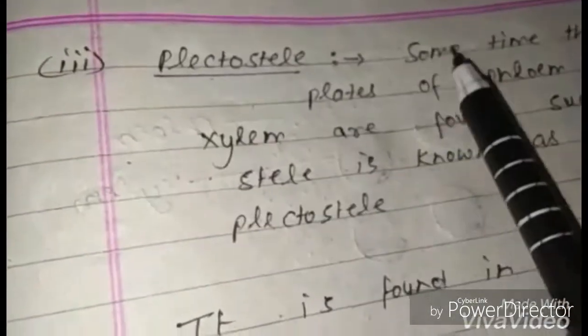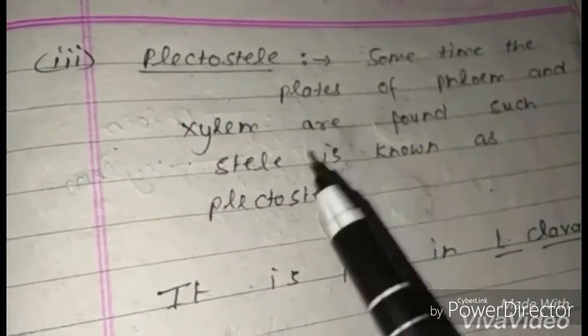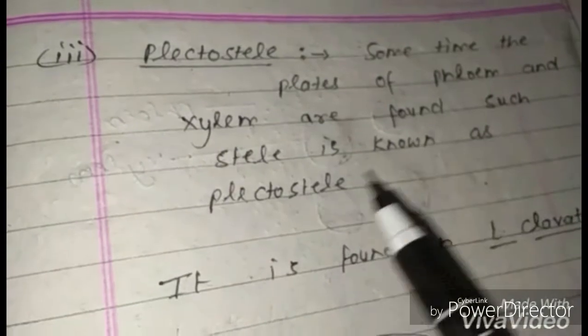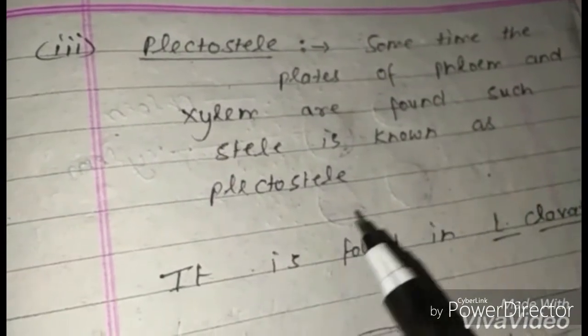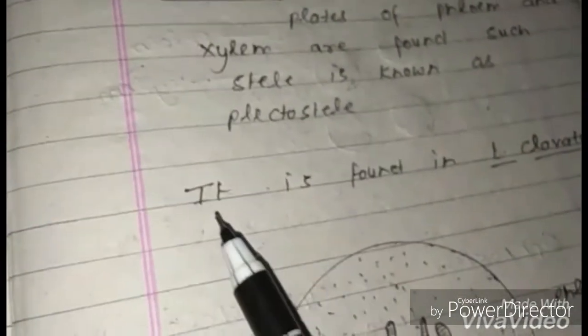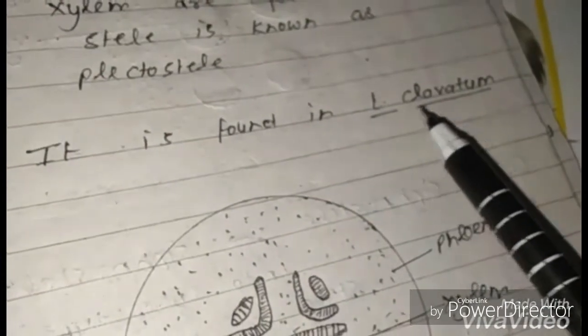Plectostele: sometimes plates of phloem and xylem are found alternately; such a stele is known as plectostele. It is found in Lycopodium clavatum.